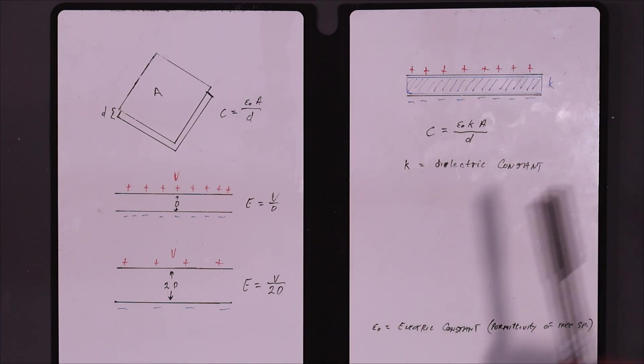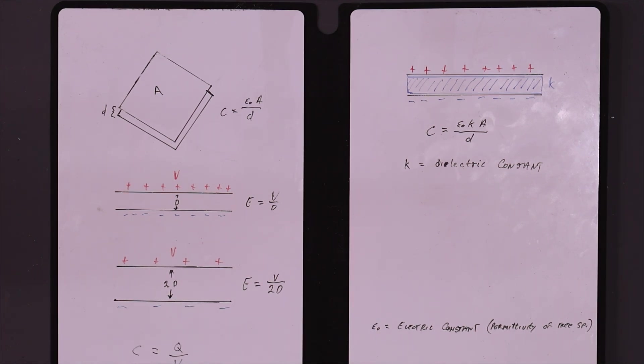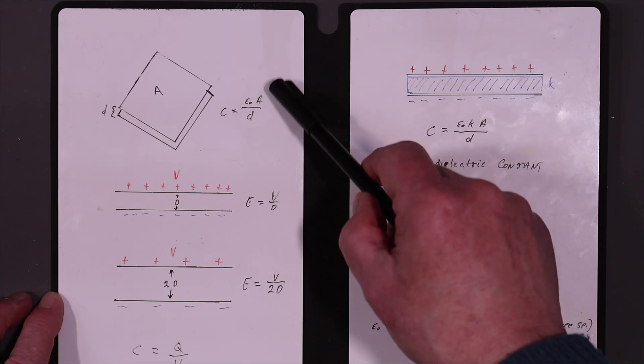There's another way to define the capacitance too. Capacitance equals the charge Q over the voltage. So if you get a one-farad capacitor, pile a coulomb of charge on it, you'll get one volt across that capacitor. That is kind of an external way of looking at capacitors. The real way to look at capacitors is this way.